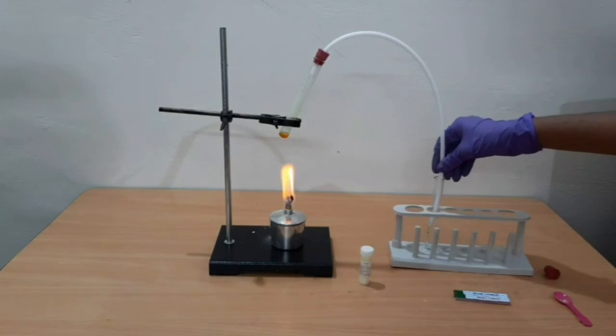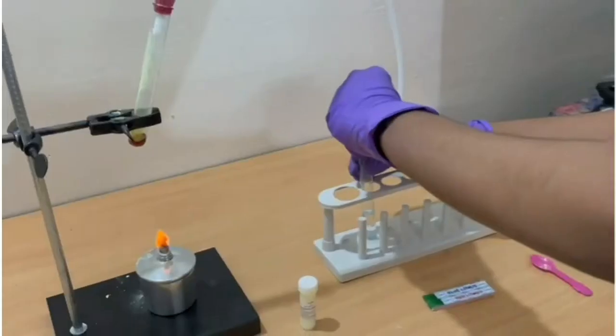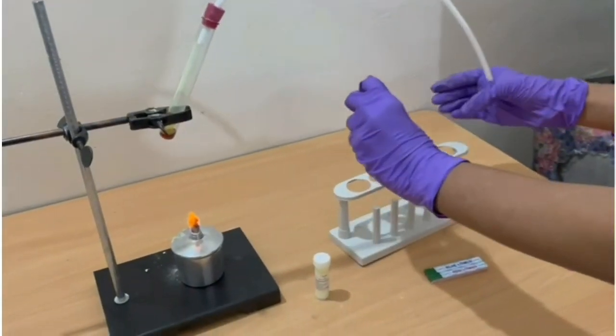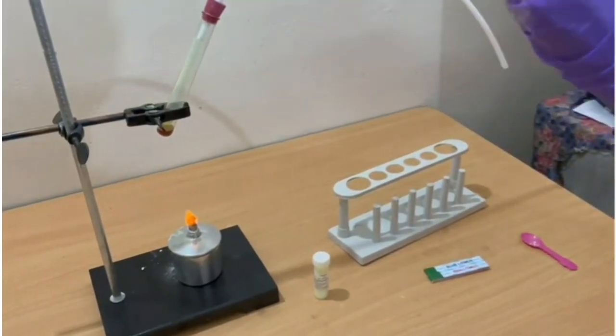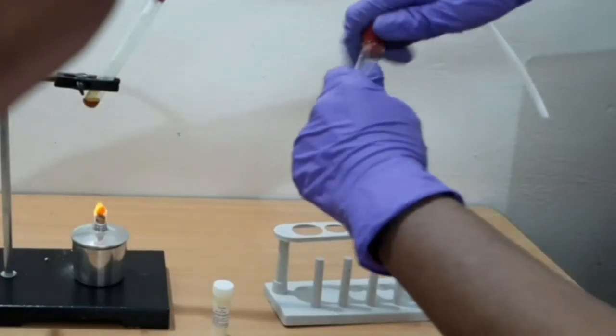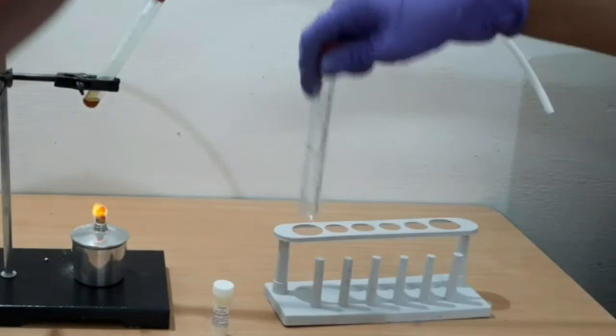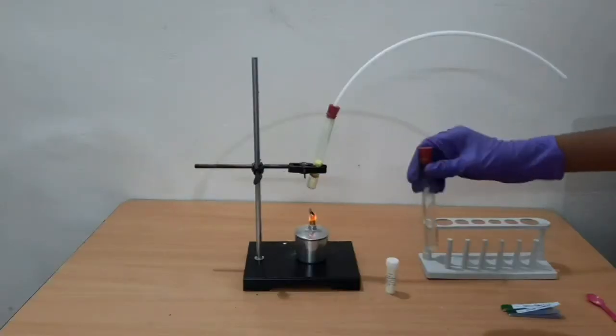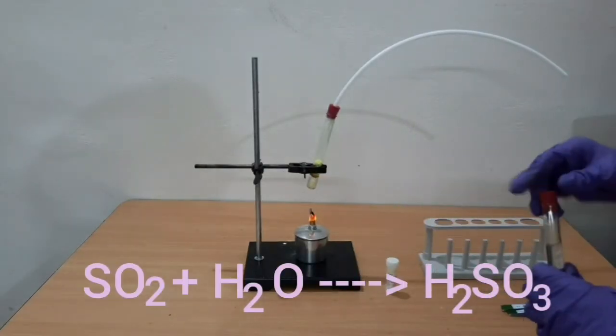Collect the gas liberated on heating sulfur powder in the other test tube containing water. Now shake the test tube to mix sulfur dioxide with water. The sulfur dioxide dissolves in water to form sulfurous acid.